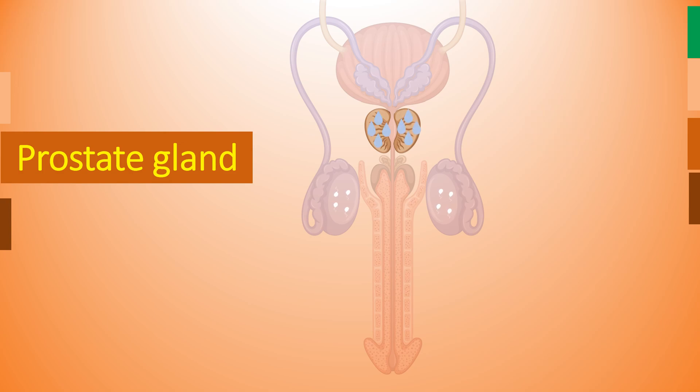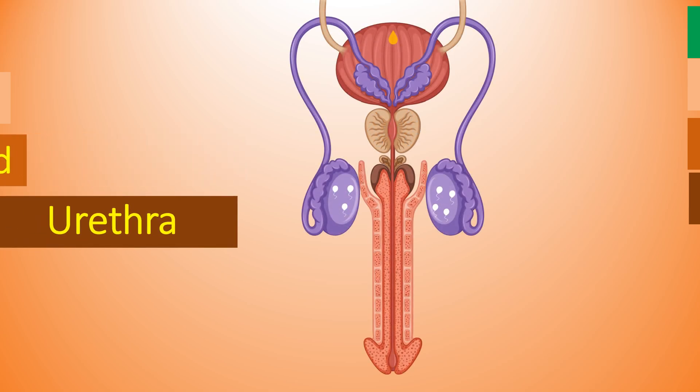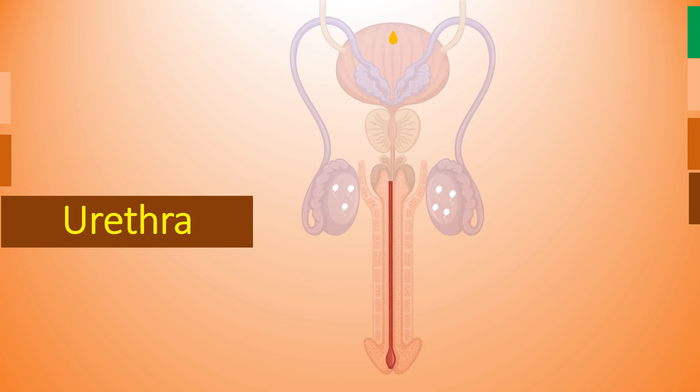The prostate gland secretes a thin milky alkaline fluid which makes the sperm active. Its fluid also helps to nourish the sperm. Next we have the urethra. It is a tube-like structure that carries urine from the bladder to the outside of the body.